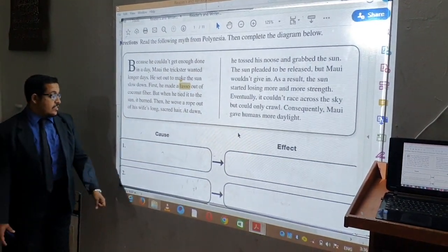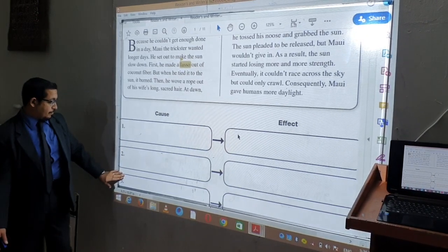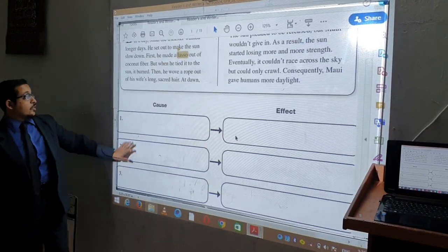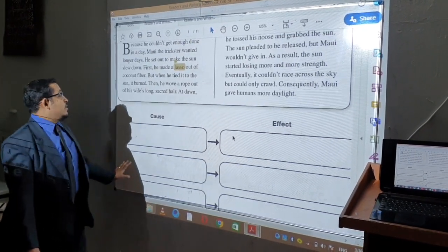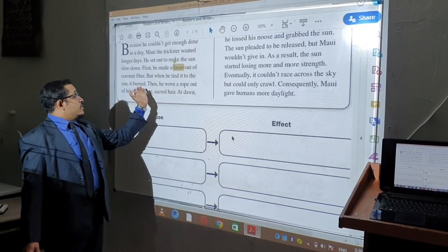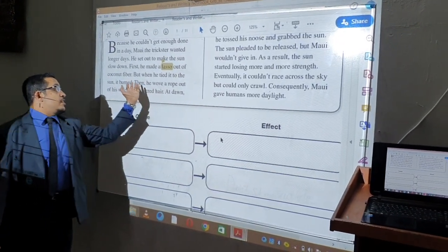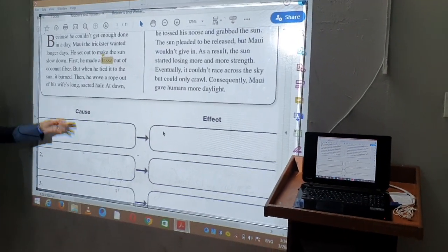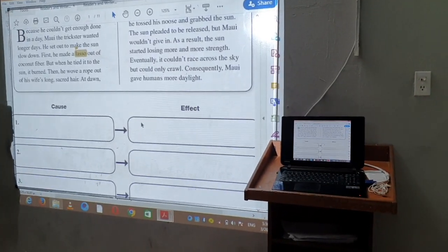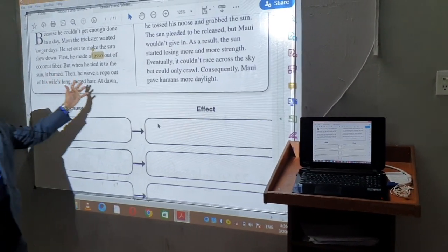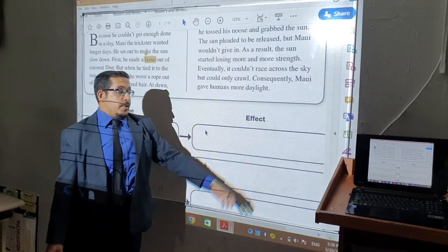The third sentence that we can write for cause and effect - as we know, we have four things that we are required to write. He said, he wove a rope out of his wife's long sacred hair. As a result of that, what happened? He was able to grab the sun.